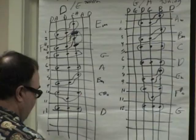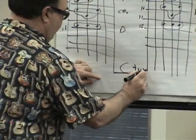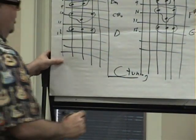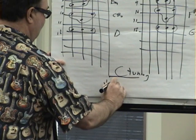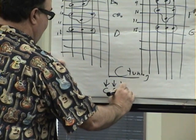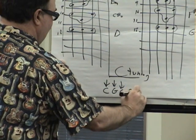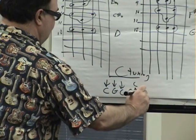Instead of writing it up, C tuning is this: C tuning is simply 6 is down to C, 5 is down to G, 4 is down to C, then G stays the same, the second string is up to C, and then E stays the same.